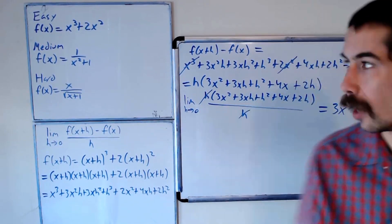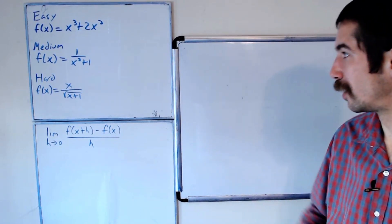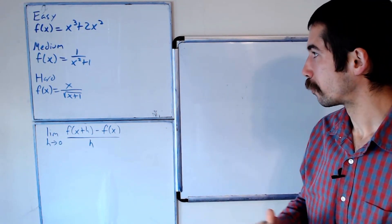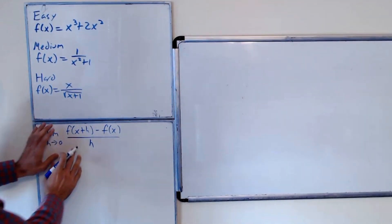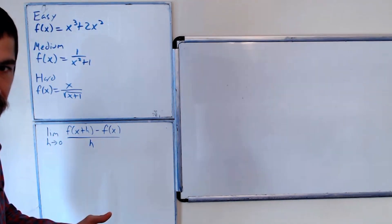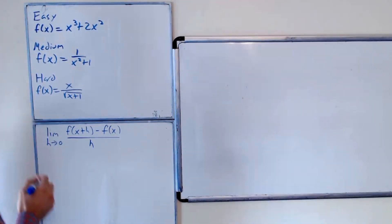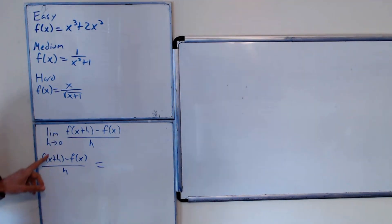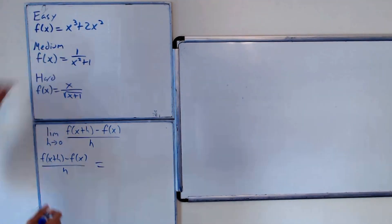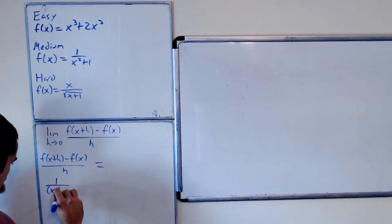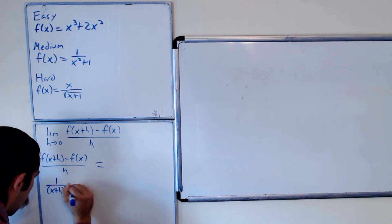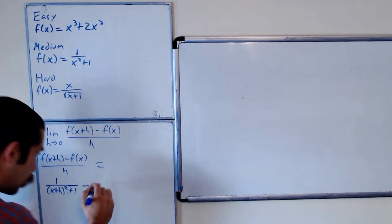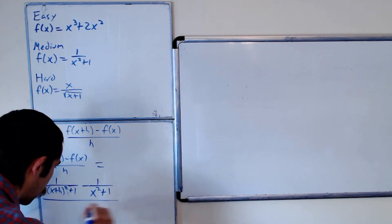On to the medium. Here's a more challenging one: our function is 1/(x²+1). Again, we want to find the derivative using the limit definition. Let's just focus on this difference quotient — ignoring the limit notation for now to save writing. f(x+h) minus f(x) over h equals 1/(x+h)² + 1 minus 1/(x²+1), all over h.